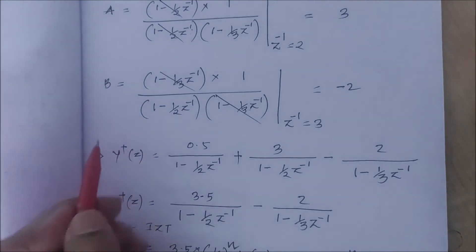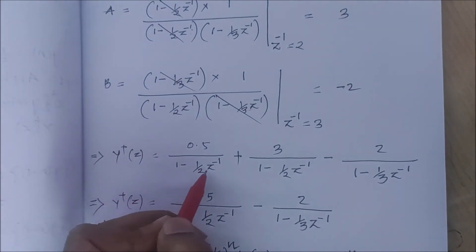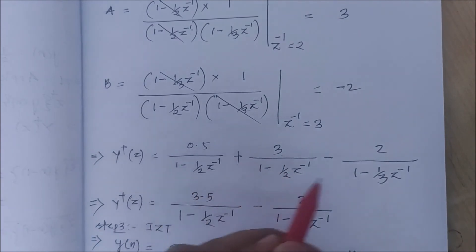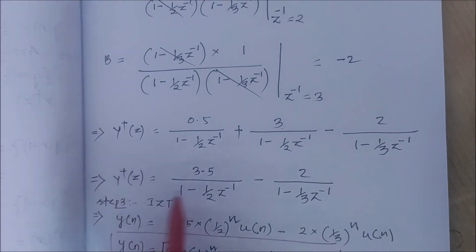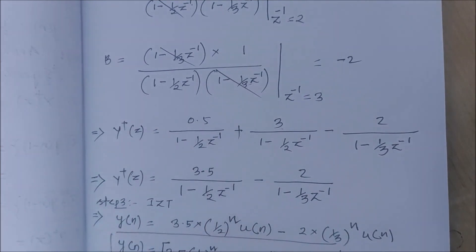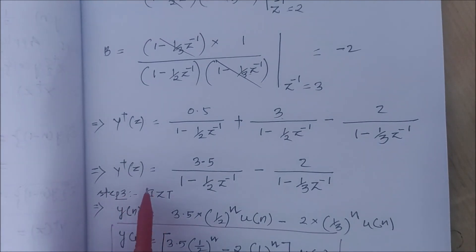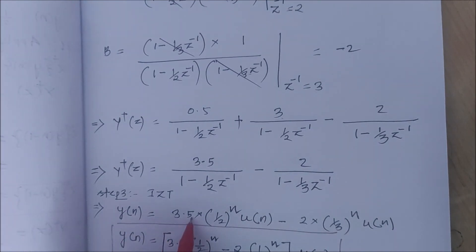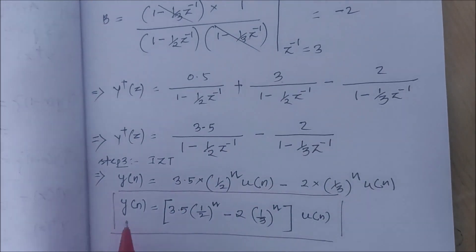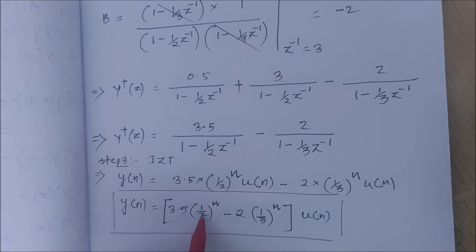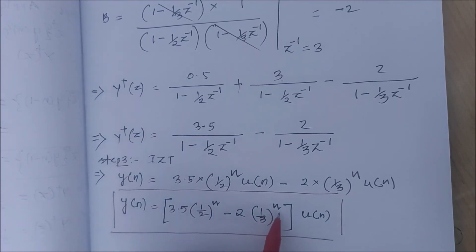Substituting the values of A and B: Y(z) = 0.5/(1-(1/2)z^(-1)) + 3/(1-(1/2)z^(-1)) - 2/(1-(1/3)z^(-1)), which simplifies to Y(z) = 3.5/(1-(1/2)z^(-1)) - 2/(1-(1/3)z^(-1)). Taking the inverse Z-transform in step 3, y(n) = [3.5·(1/2)^n - 2·(1/3)^n]·u(n).